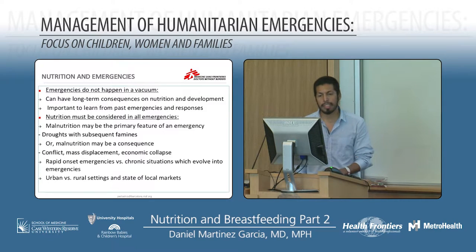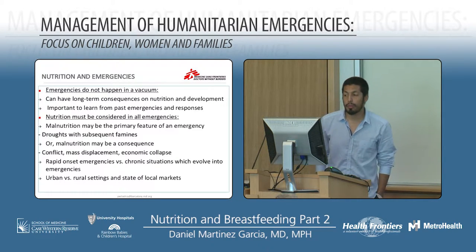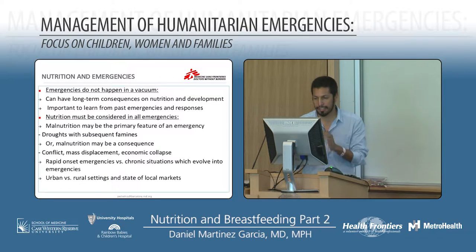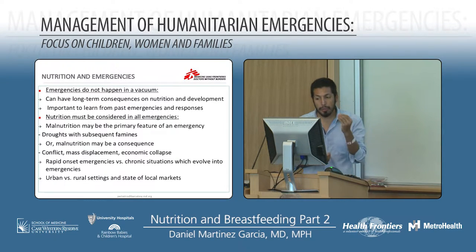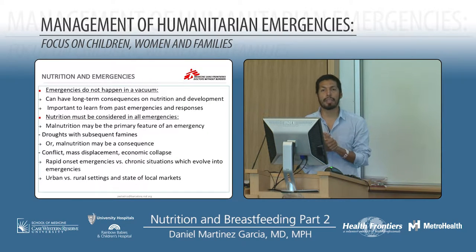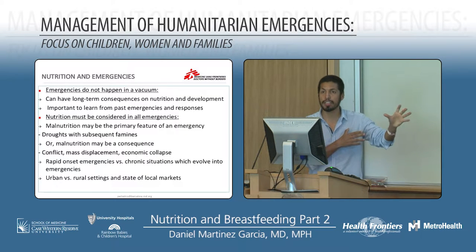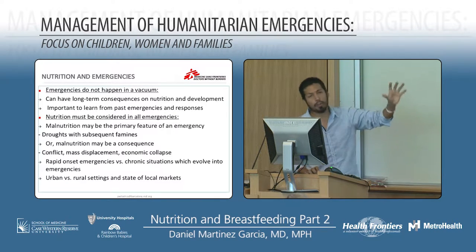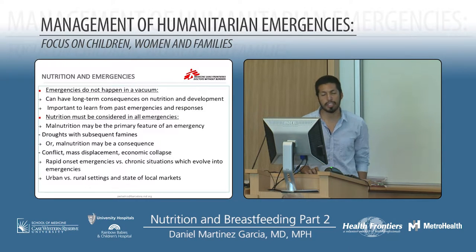Most importantly, emergencies do not happen in a vacuum — they can have long-term consequences on nutrition and development. It's important to learn from past emergencies, which is why we are here. Nutrition is now one of the core components of emergency response, but it wasn't so important 30 years ago. Malnutrition may be the primary feature of an emergency, and malnutrition rates are one of the best proxy indicators of the general situation of a population.